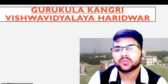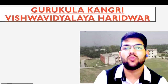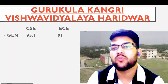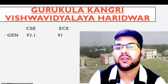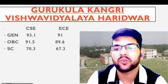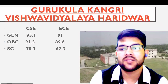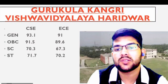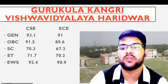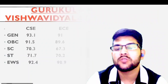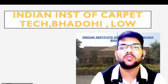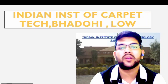Next is Gurukul Kangri Vishwavidyalaya, Haridwar. General: 93.1 and 91; OBC: 91.5 and 89.6; SC: 70.3 and 67.3; ST: 71 and 70; EWS: 92 and 90 percentile.